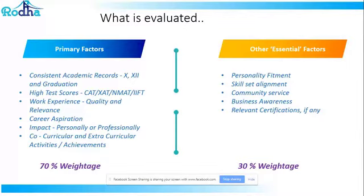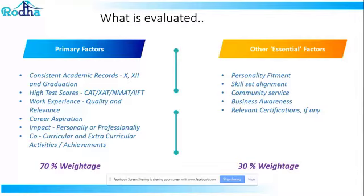The fourth primary factor is career aspiration — specifically, the need for an MBA. Business schools want to understand, through a statement of purpose, essays, or form filling, why you need an MBA in the first place. How have you zeroed down from multiple options for career growth to conclude that you definitely need an MBA? The need for an MBA is a point admissions committees look at very closely.